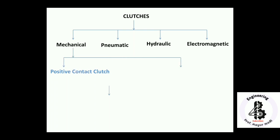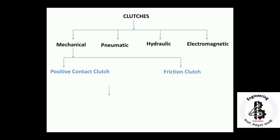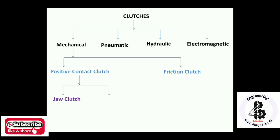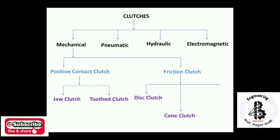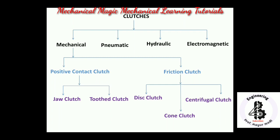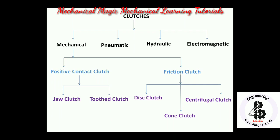For mechanical clutches, there are two types: positive contact clutch and friction clutch. Positive contact clutches are further divided into jaw clutch and tooth-type clutch. Friction clutches include disc clutch, cone clutch, and centrifugal clutch. In this video, I am focusing on friction clutch, centrifugal clutch, cone clutch, and jaw clutch.